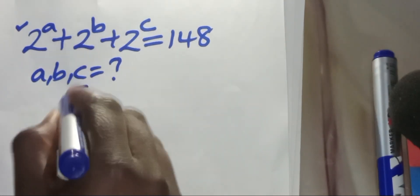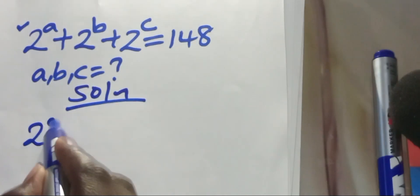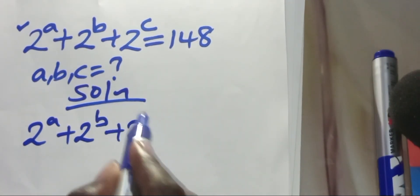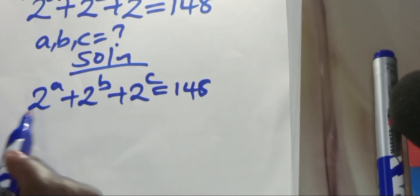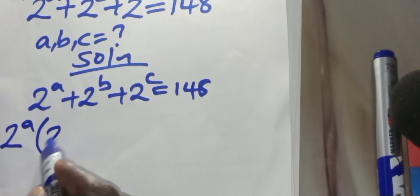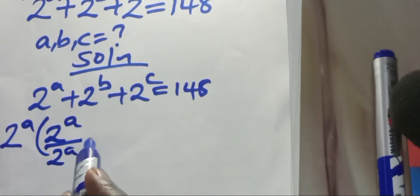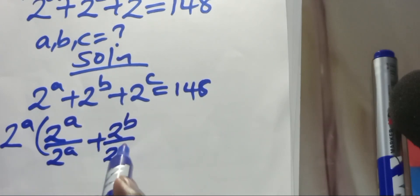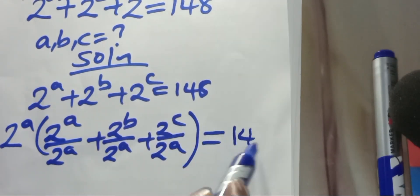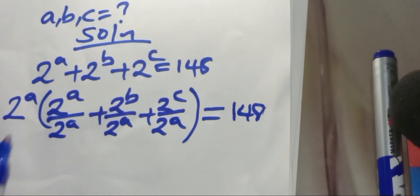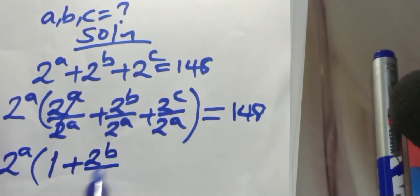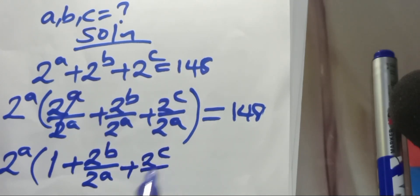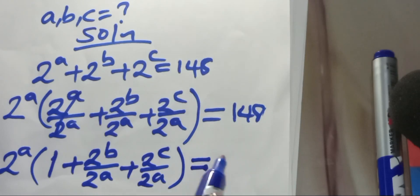From here, we have 2 to the power A plus 2 to the power B plus 2 to the power C, equal to 148. Now let's form a product of two factors. That is, 2 to the power A, multiplied by the parenthesis: 2^A divided by 2^A, plus 2^B divided by 2^A, plus 2^C divided by 2^A, equals 148. Simplifying, we get 2^A times (1 plus 2^B over 2^A plus 2^C over 2^A) equals 148.